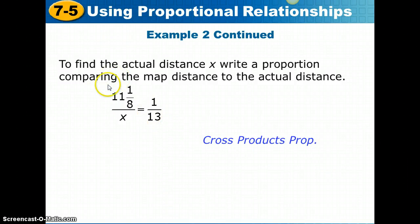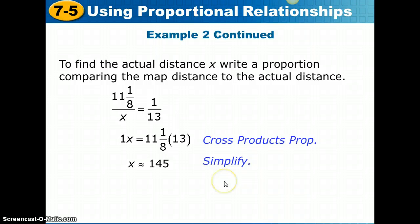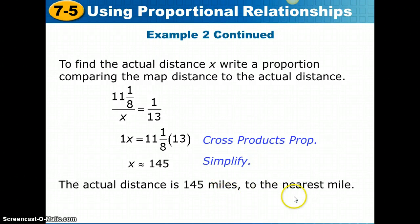Each ratio will compare a map distance to the actual distance. So the map distance of 11 and 1 eighth inches over the actual distance x has to be the same as the scale, 1 inch to 13 miles in actual distance. We're going to multiply our cross products. 11 and 1 eighth times 13 must equal x times 1. You can convert to a decimal by just taking 1 divided by 8 and adding 11. When you do that, you get 11.125. 11.125 times 13 is 144.625. So x is approximately 145 when we round to the nearest mile. The actual distance is about 145 miles.